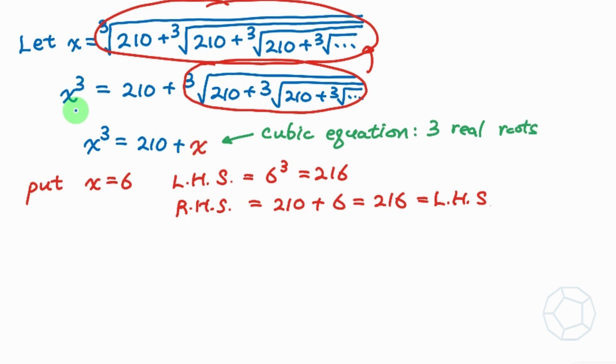Let's put the two terms on the right hand side to the left. So x cube minus x minus 210 is equal to zero. Now we factorize the left hand side in the following way.